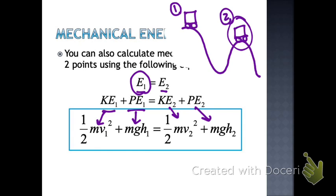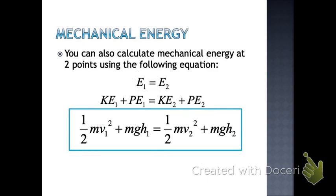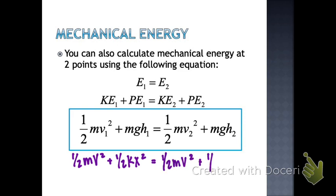Make sure this conservation of energy equation is on your equation sheet — it's a super important one. You can have two versions: one-half mv squared plus mgh equals one-half mv squared plus mgh for gravitational potential energy, and one-half kx squared substituted in for potential energy of a spring. Having that second version is helpful when problems involve springs instead of gravitational potential energy.